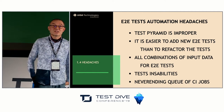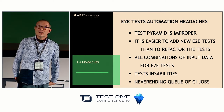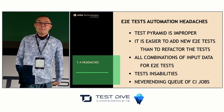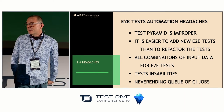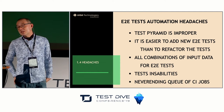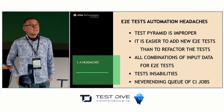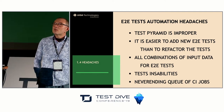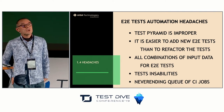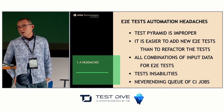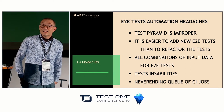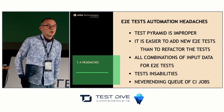The headaches related to end-to-end regression and test automation are many. Typical examples include an improper test pyramid — it is often easier to add new end-to-end tests than to refactor them into a better suite. Using all combinations for input data is another headache, along with test instabilities and a never-ending queue of CI jobs.